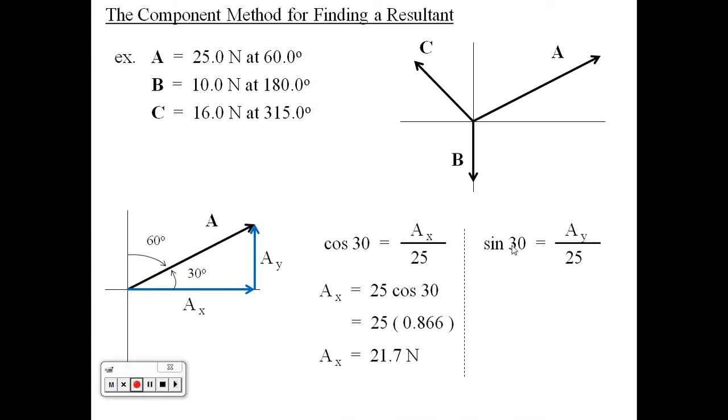Now doing the same thing for A sub Y, which is the opposite side, we're going to use a sine function. Sine of 30 is A sub Y over 25. Multiply 25 over, and A sub Y turns out to be 12.5 Newtons. That's vector A.